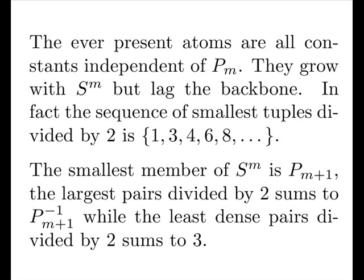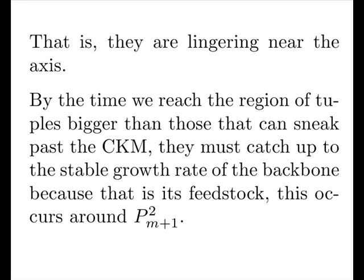As the prime is getting bigger, it's moving further away from the stark conditions, the upper envelope. And the lower envelope is sort of fixed near the backbone. That is, they are lingering near the axis. By the time we reach the region of tuples bigger than those that can sneak past the CKM, they must catch up to the stable growth rate of the backbone, because that is its feedstock, and this occurs around our next prime squared, as we showed earlier with our study with the delta pi function.